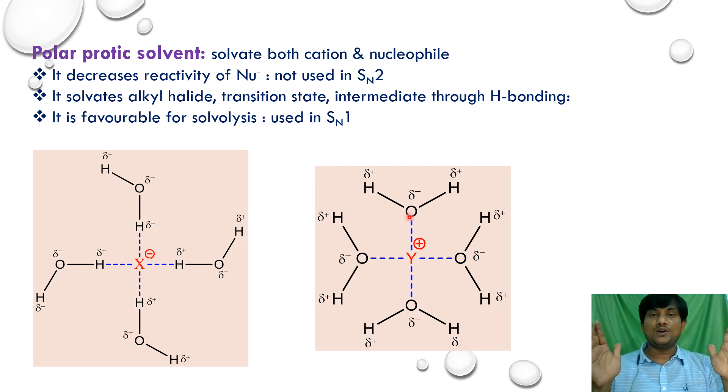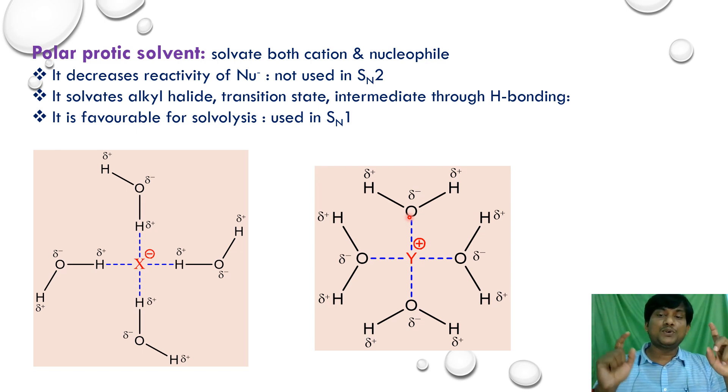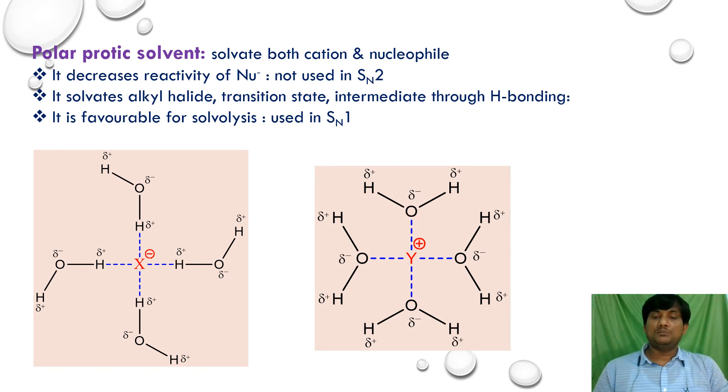To conclude: polar aprotic solvents are suitable for SN2 reactions, while polar protic solvents are suitable for SN1 reactions.